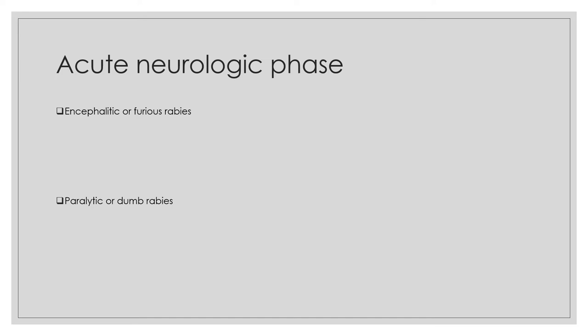Paralytic or dumb rabies occurs in 20% of cases. It is characterized by flaccid paralysis, beginning in the bitten limb and ascending to quadriplegia with facial paralysis. Hydrophobia and other features of encephalitic rabies are absent in paralytic rabies. Patients with paralytic rabies can survive longer — up to 31 days — compared to encephalitic presentation (approximately 2 weeks). However, death is almost certain and recovery is extremely rare.